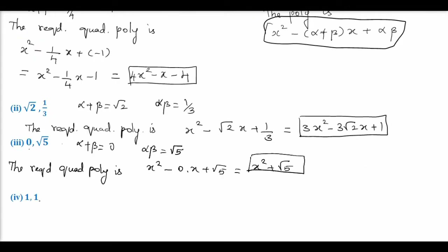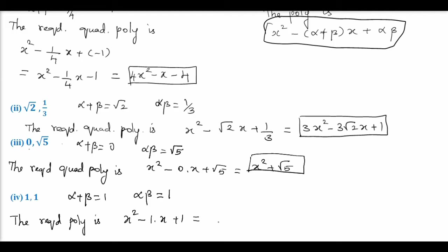Now let's pass on to the fourth subdivision. The numbers given are 1 and 1, that is sum of roots alpha plus beta = 1 and product of roots alpha into beta = 1. So the required polynomial is X square − 1 · X + 1, that is X square − X + 1. This is the required quadratic polynomial whose sum of zeros is 1 and product of zeros is 1.